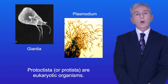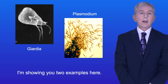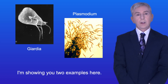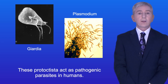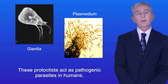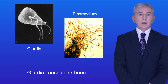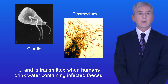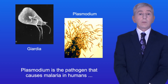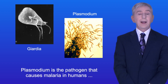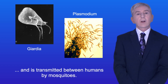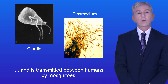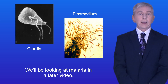Protoctista, or protista, are eukaryotic organisms, and I'm showing you two examples here. These protoctista act as pathogenic parasites in humans. Giardia causes diarrhoea and is transmitted when humans drink water containing infected faeces. Plasmodium is the pathogen that causes malaria in humans and is transmitted between humans by mosquitoes. We'll be looking at malaria in a later video.